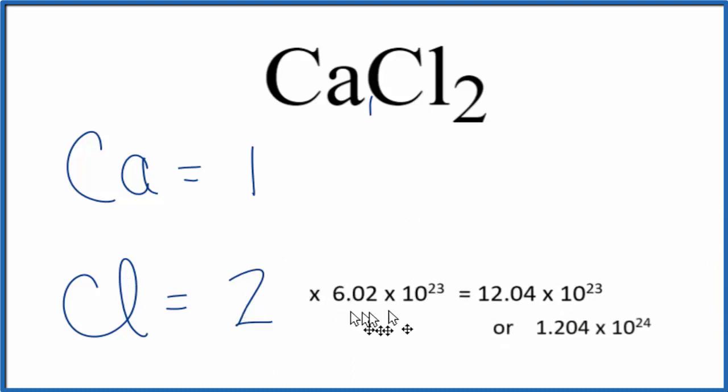Two times Avogadro's number, that gives us the total number of chlorine atoms in one mole of CaCl2. This is Dr. B, and thanks for watchin'.